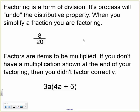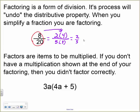If we have the fraction 8 twentieths, the numerator can be rewritten as 2 times 4. So basically, you've taken this 8 and turned it into the factors of 2 and 4. Remember, factors are numbers to be multiplied. So the bottom number would come out to 5 times 4. We're just turning it into a multiplication, and we then simplified the 4s, which will leave us with 2 over 5. So the process that we did was called factoring.